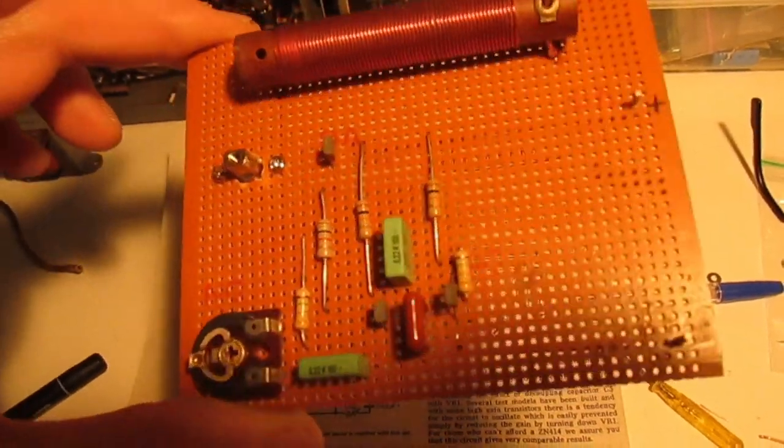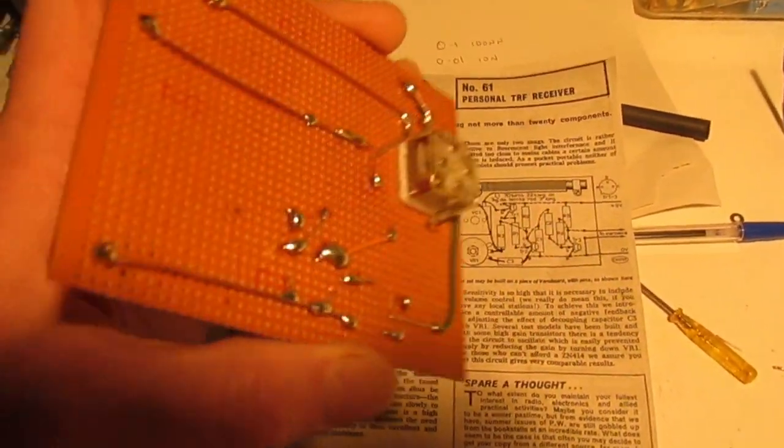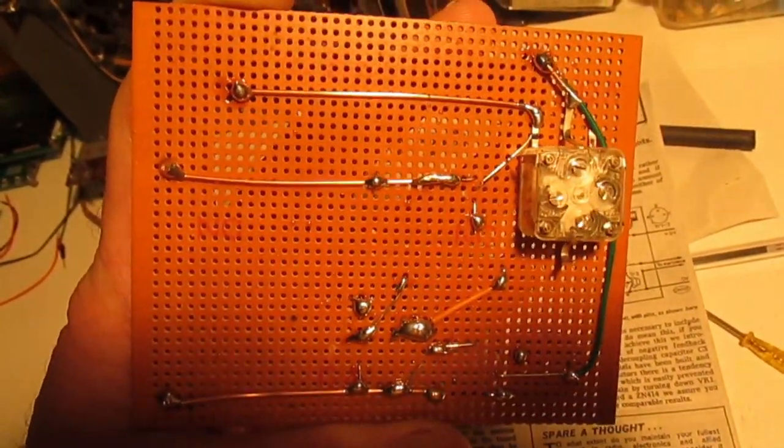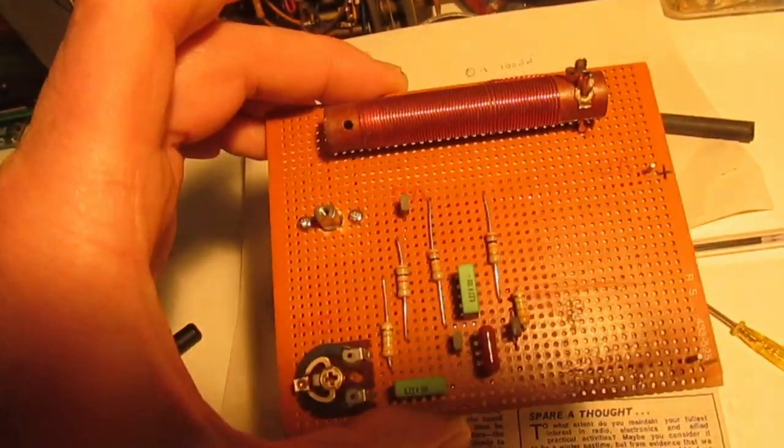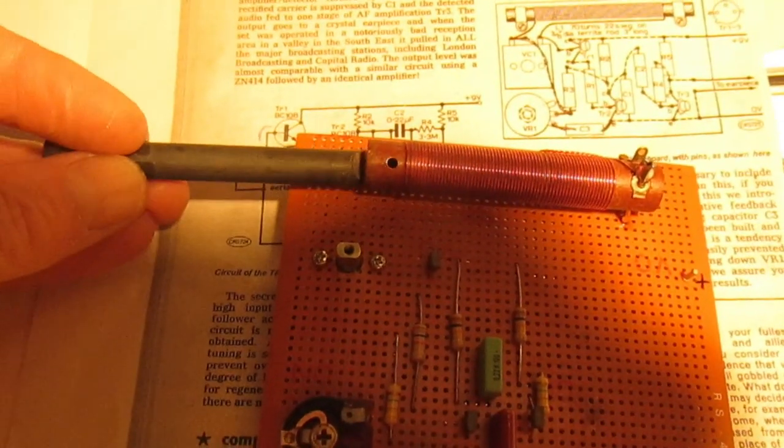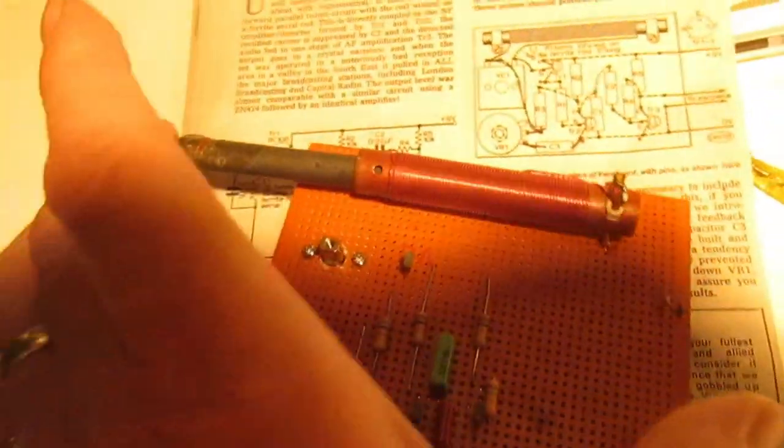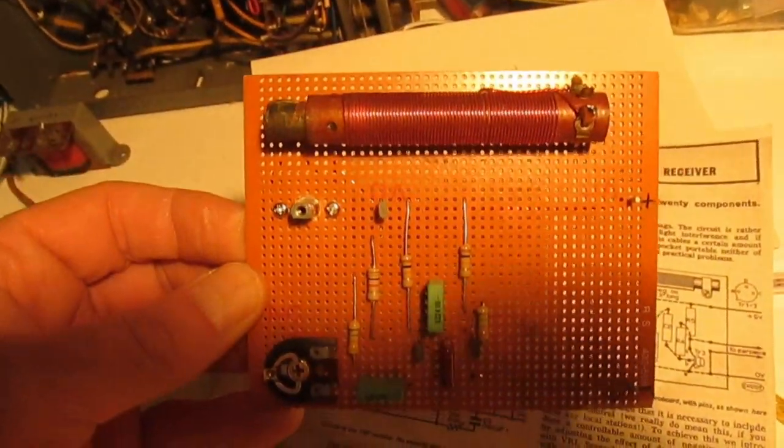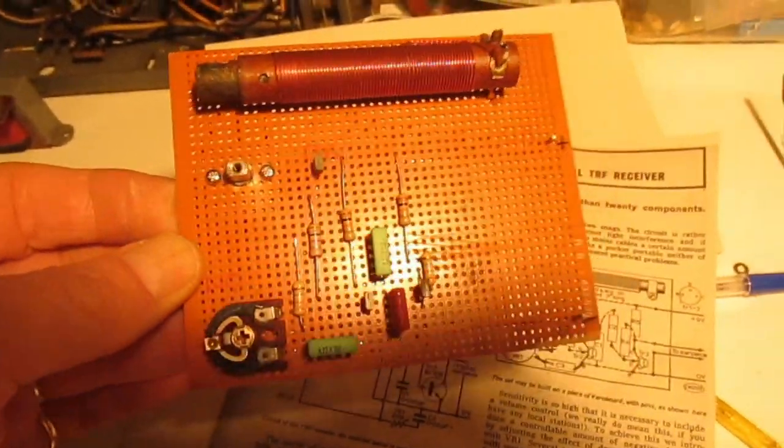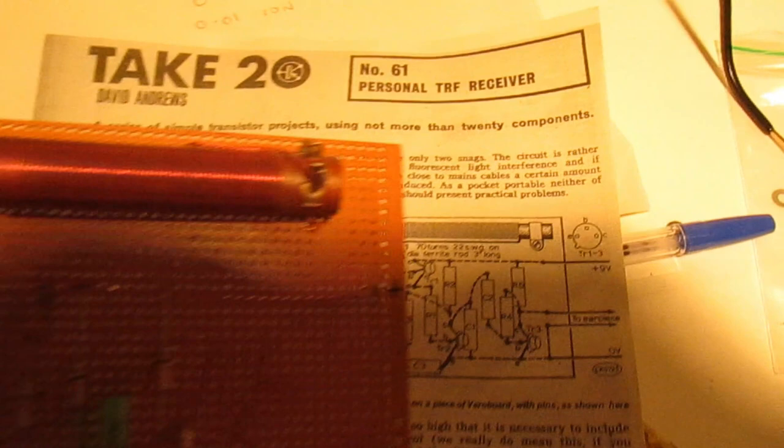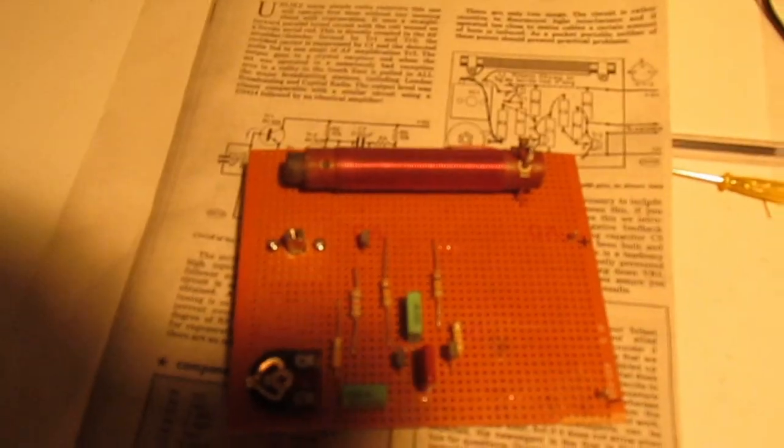Right, so that's it all finished. All we've got to do now is connect it to an amplifier, a little audio amplifier, and we'll power it up, see if it works. Oh, there's one thing I forgot actually, we need the ferrite rod and the aerial. So yeah, all finished, let's power it up now and see what happens. Oh, nearly forgot actually, we need a knob.